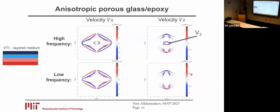If our medium is anisotropic — for example, VTI, which corresponds to a layered medium like on Earth — the response is much more complex. At high frequencies, there are fast wave, shear wave, and also slow wave.